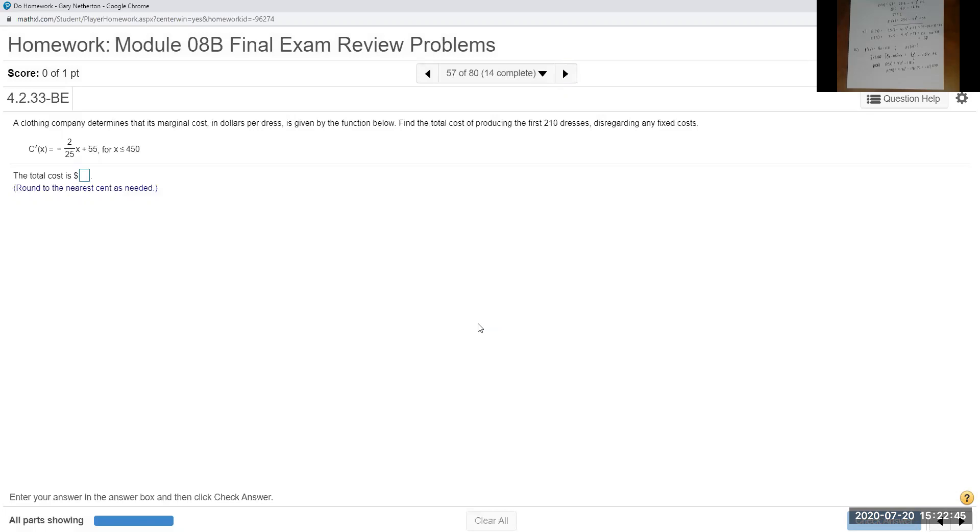They're losing a lot of money. And another one. This one: clothing company marginal cost is given by the function below, where it's a derivative. Find the total cost. Once again, no fixed cost. I think it's just like the last problem: we're going to take the integral and plug in 210.